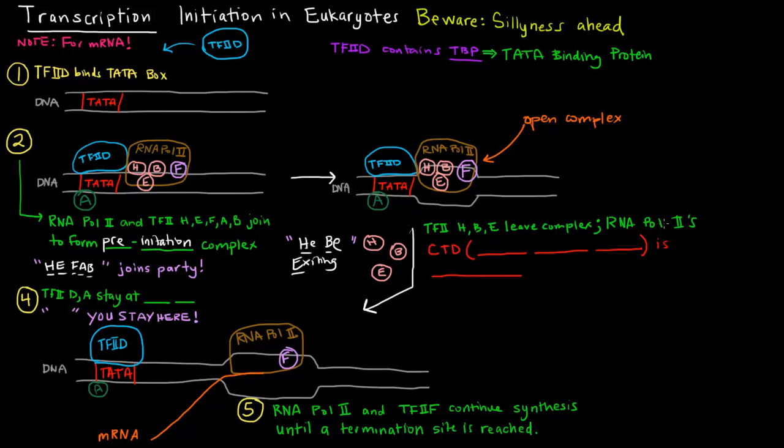So RNA polymerase II then, its CTD or carboxy terminal domain is phosphorylated. So what is the carboxy terminal domain? RNA polymerase is a protein and proteins are made up of long strings of amino acids. Amino acid chains, polypeptide chains, have an amino terminus and a carboxy terminus. So its carboxy terminal domain is phosphorylated. Once that happens, transcription is initiated, it can go. So transcription begins.